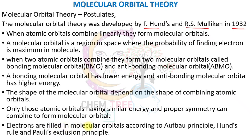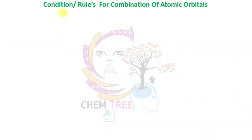Electrons are filled in molecular orbitals according to the Aufbau principle, Hund's rule, and Pauli's exclusion principle. Molecular orbitals are polycentric in nature and are represented as sigma, sigma star, pi, and pi star.